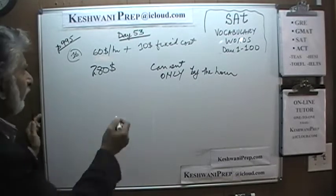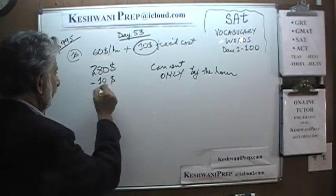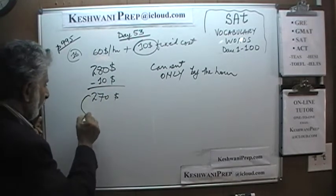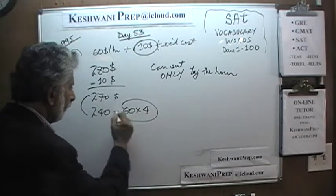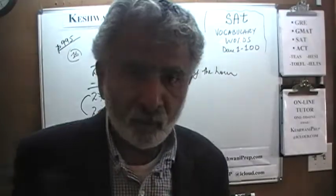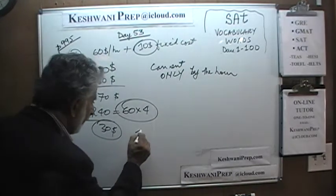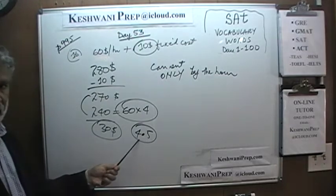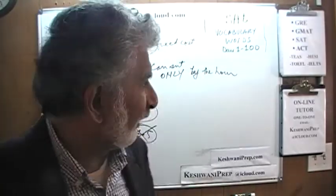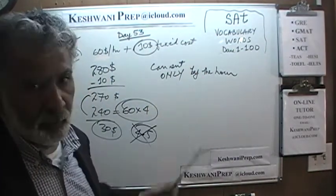Well, if you only have $280, first we have to spend the $10 for the safety course — that leaves us only $240. $240 will allow us to rent it for 4 hours. Even though we will have $30 left over, do not enter 4.5. 4.5 will be marked wrong because the question clearly tells us we can rent it only by the hour. We cannot rent it by the fraction of an hour. It's either four hours or five hours — we can't afford five. We're going to rent it for four hours.